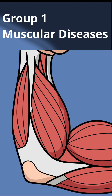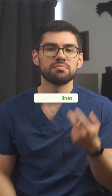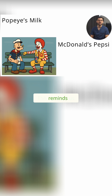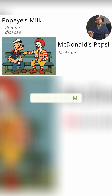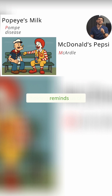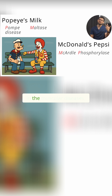So let's go group by group. Group 1: Muscular diseases. In this group we have two lines, which are the first two lines — Popeye's milk and McDonald's Pepsi. This reminds us of the two classic mainly muscular disorders, which are Pompe disease and McCardle disease. The P in Popeye's stands for Pompe and the M in McDonald's stands for McCardle. The drink each of them is holding reminds us of the enzyme which is deficient in each disease — M in milk is for maltase and P in Pepsi is for phosphorylase. And because we're in the muscular diseases, this is of course the muscular phosphorylase.